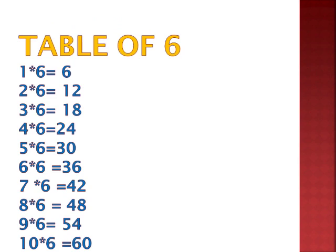Now is the table of 6. 1 six is 6, 2 sixes are 12, 3 sixes are 18, 4 sixes are 24, 5 sixes are 30. Then 6 sixes are 36, 7 sixes are 42, 8 sixes are 48, 9 sixes are 54, 10 sixes are 60.